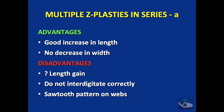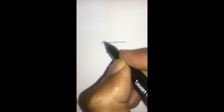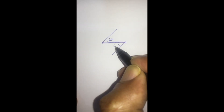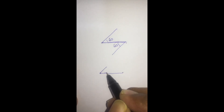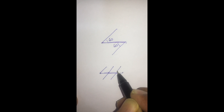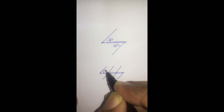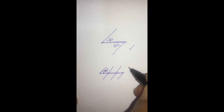With multiple Z-plasties in series, we get a good increase in length similar to a single Z, but there will be no decrease in width. So when the tissue laxity is less on the sides and a single Z is not possible, multiple Z-plasties are ideal. The disadvantages are that we may not get the entire length gain, and the flaps may not interdigitate correctly — a sawtooth pattern may be seen, especially on the webs. When we have a scar AB, whether we do a single Z of 60 degrees or multiple Z-plasties, we get the same amount of lengthening. However, the amount of tissue recruited from the sides will be more in the single Z-plasty and less in Z-plasties in series.